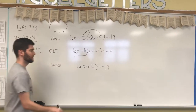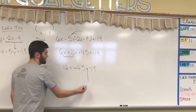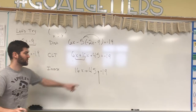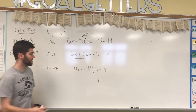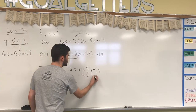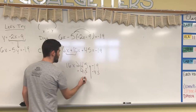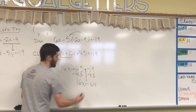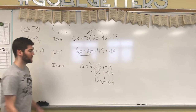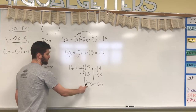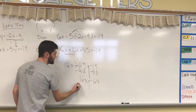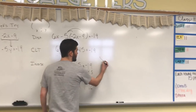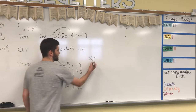So I have a two-step equation here. I'm going to separate my two sides of the equation, and I'm going to move my independent number first, my solo number, which here would be my 45. The inverse of plus 45 is minus 45. That leaves me with 16x equals negative 64. Now I have a one-step equation. This 16 and x are attached through multiplication, so my inverse is division. I'm going to divide both sides by 16. That gets me x equals negative 4.